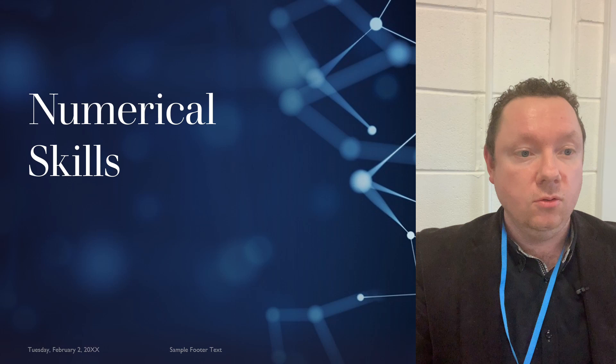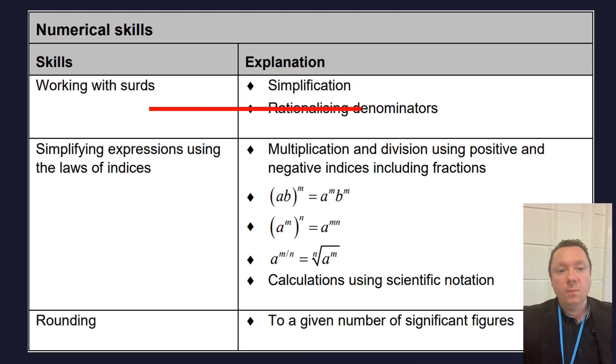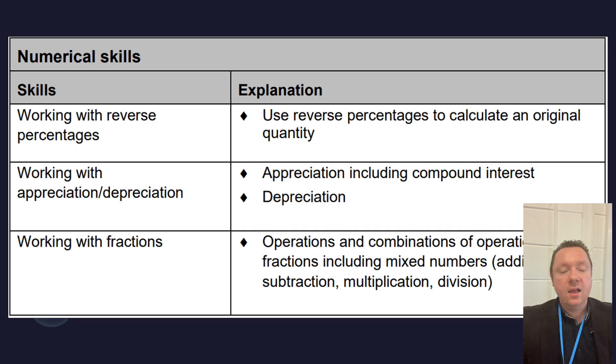First of all, let's look at numerical skills. Rationalizing the denominators with surds is out. Simplifying surds is still in. If we look at laws of indices, we have got fractional indices are out, but the standard laws of indices times and dividing, add and subtracting, all in. Rounding to significant figures are still in.